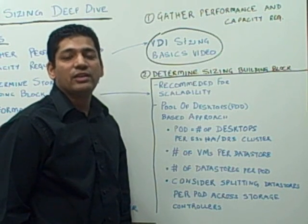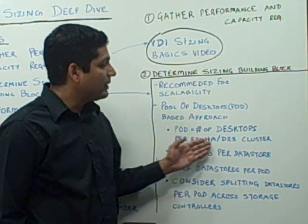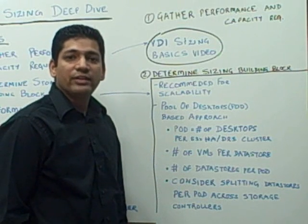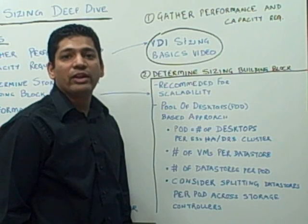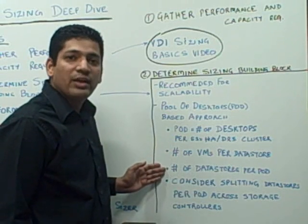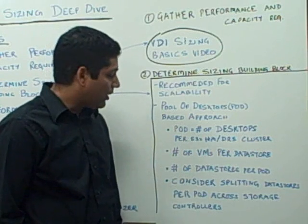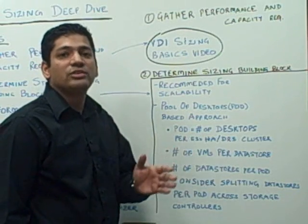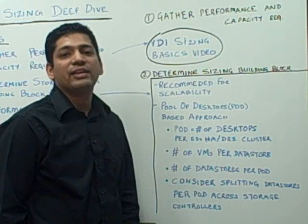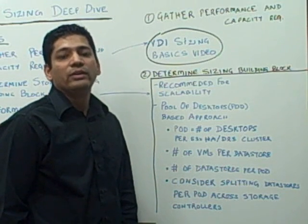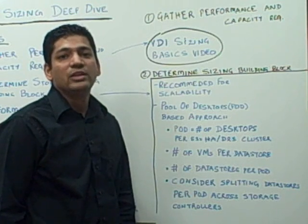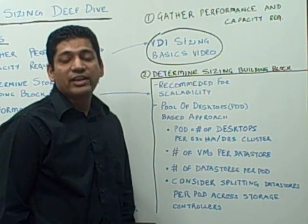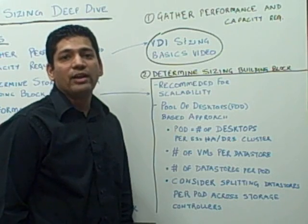As the environment scales and customers have thousands of VMs, they will have multiple HA/DRS clusters. The next step is to determine the number of VMs that can be hosted in every datastore. Once you know the number of VMs per datastore, you can estimate the number of datastores required per pod. For every pod, consider splitting the datastores across storage controllers, because a customer might start with 1,000 VMs but plan to grow to 10,000 VMs over three years. Splitting datastores across controllers helps from a scalability perspective and balances the workload.